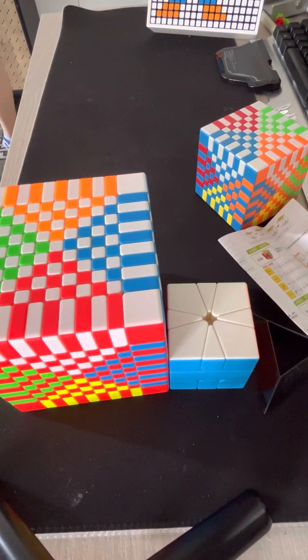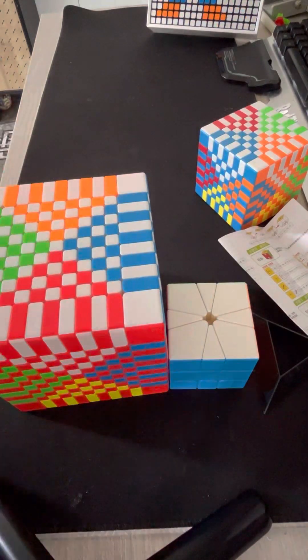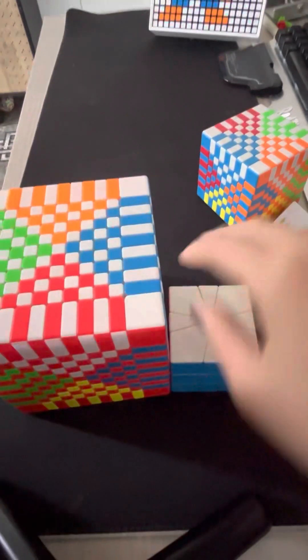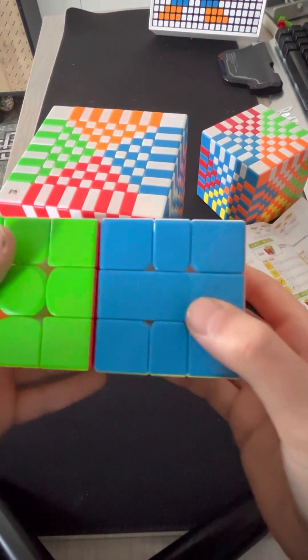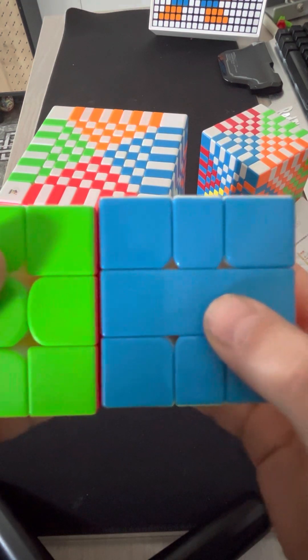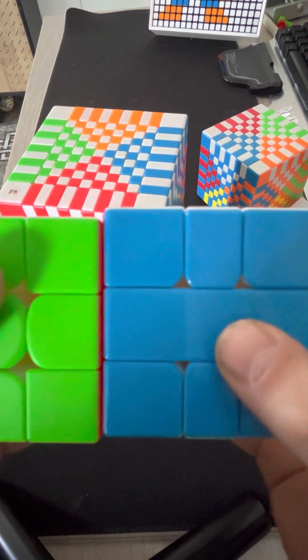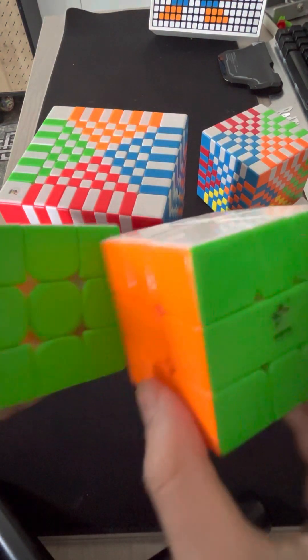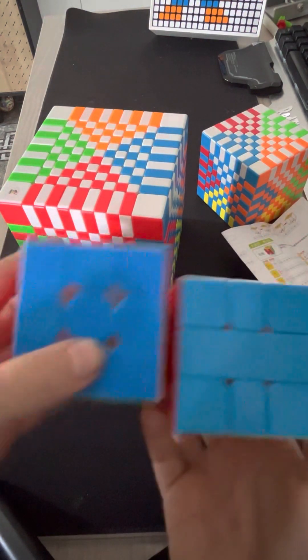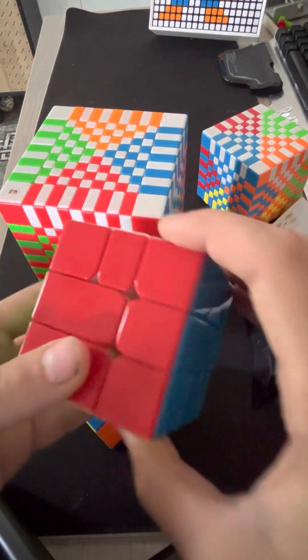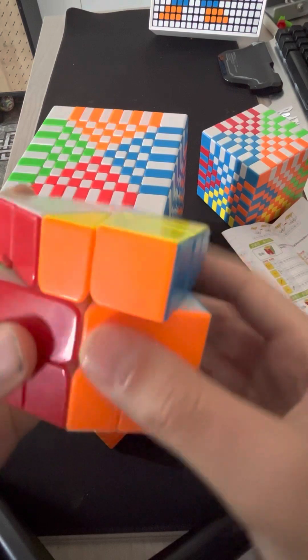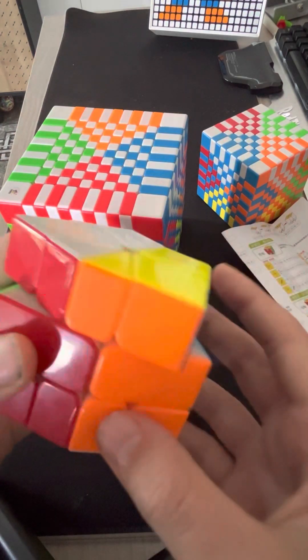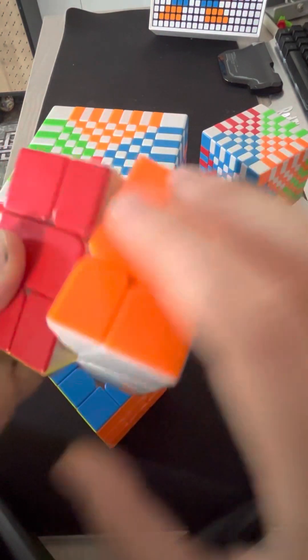Let me get here the 3x3, this is my GAN 3x3 and it should be like the same size. It's a bit bigger, like one millimeter something like that, and yeah the colors are okay. You can see the YuXin logo and yeah really cool, it moves very smooth and it's very fast.